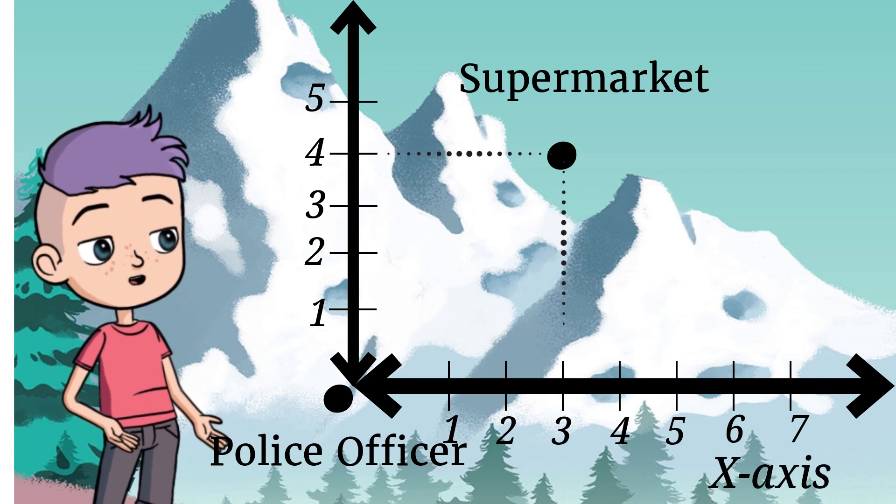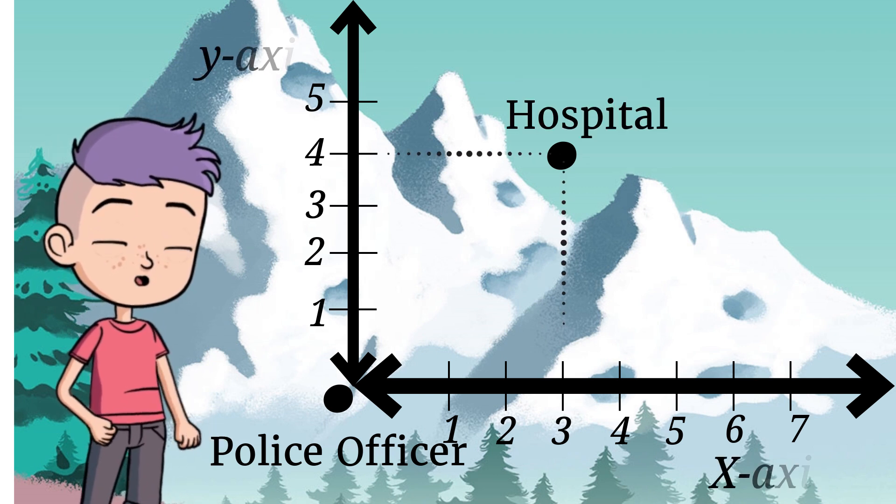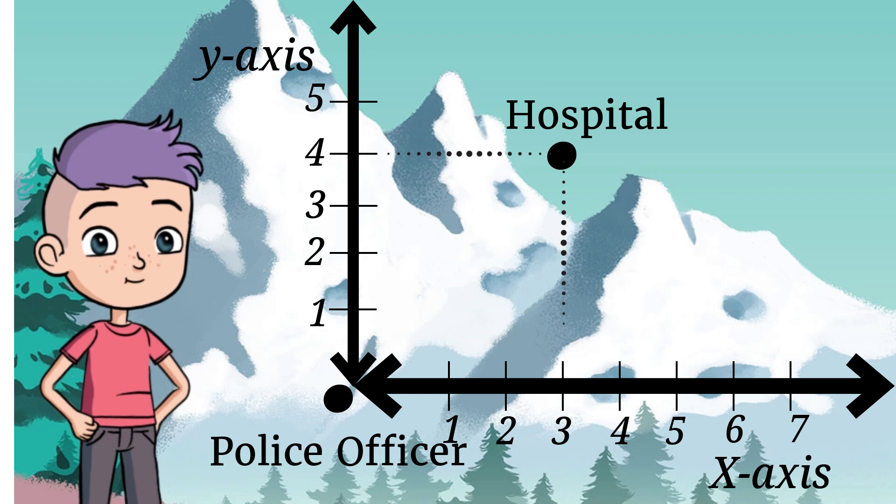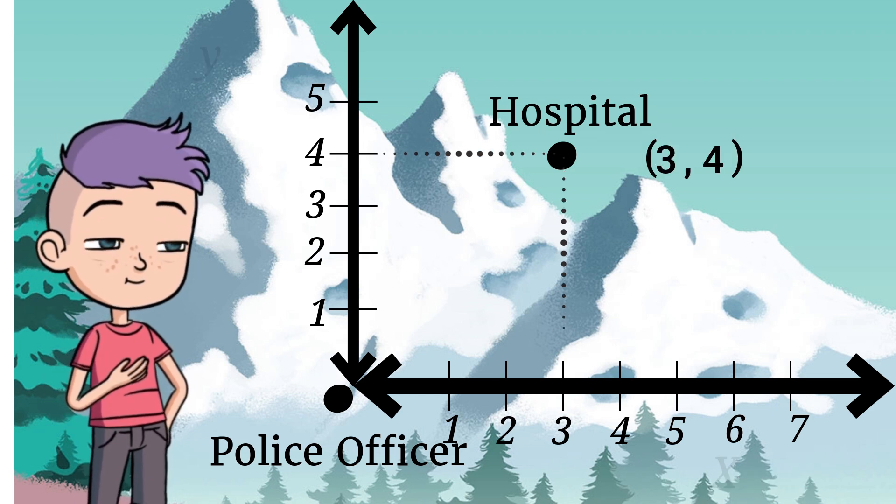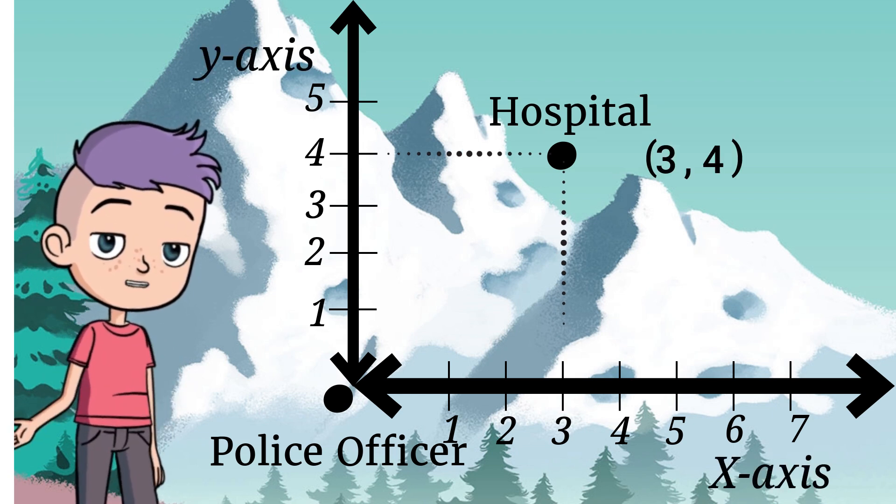The horizontal number line is our x-axis. The vertical number line is our y-axis. The hospital is located at 3, 4. This is called an ordered pair.